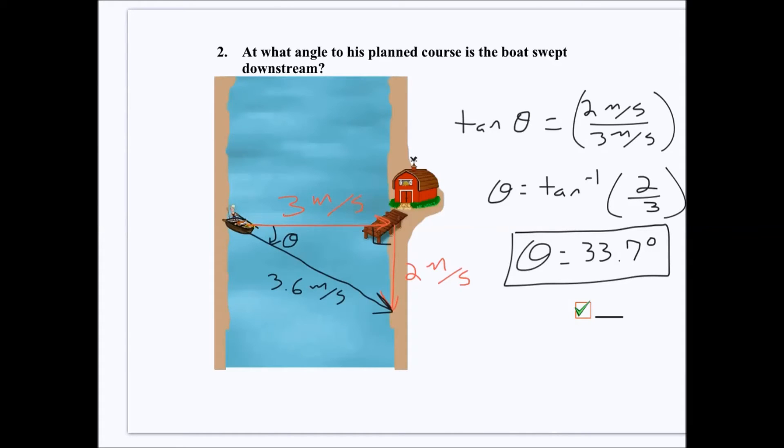However, there is one thing that I'm still missing from my answer. I've labeled it 33.7 degrees, but I still need to tell where that 33.7 degrees is going in reference to the triangle, so I'm going to add in the direction. Now there's no confusion about exactly where that 33.7 degrees points.